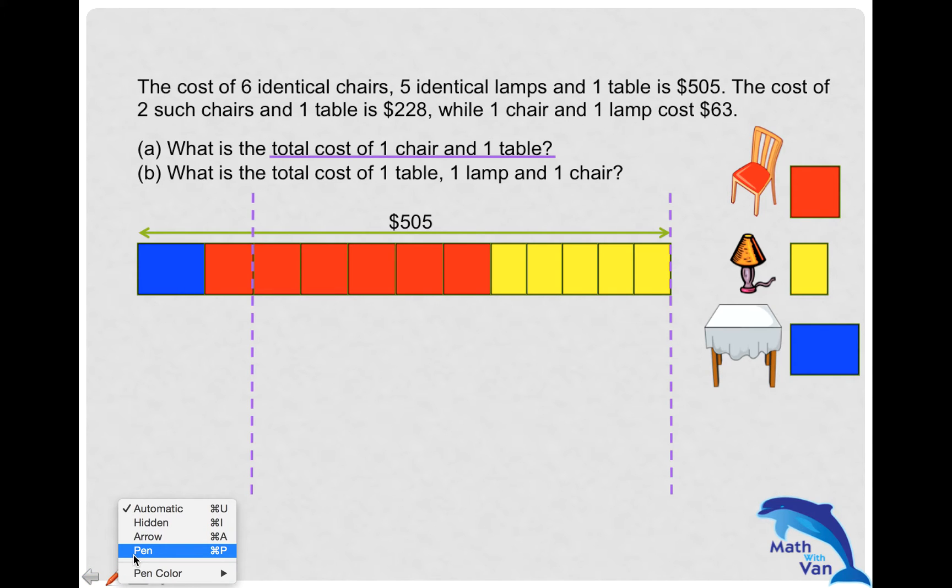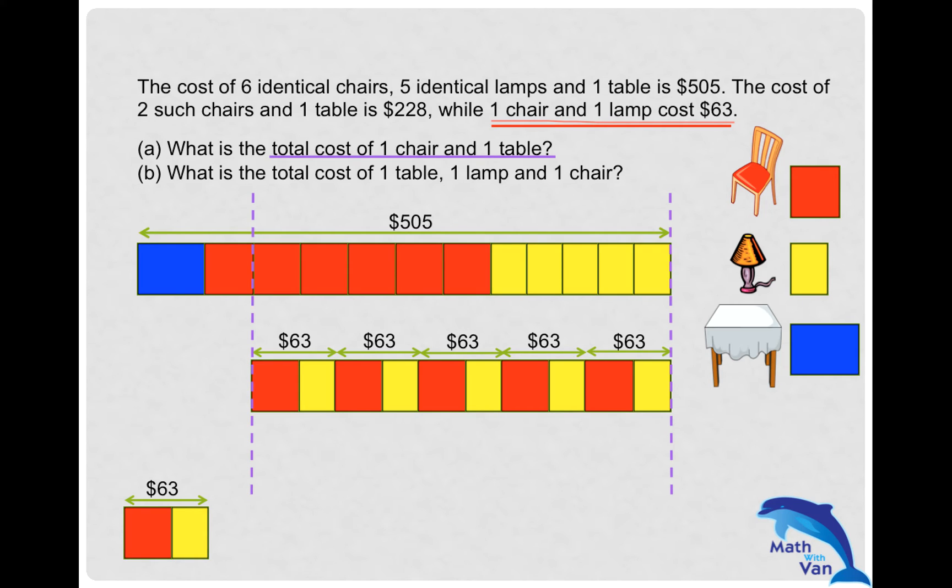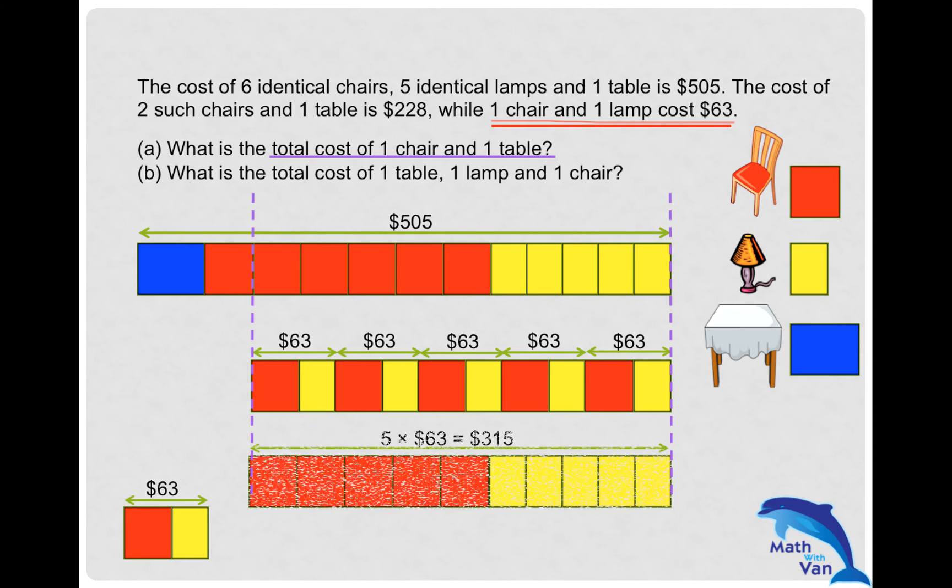Look at this—I just highlighted this particular statement: five groups of equal number of chairs and lamps. If I know one group is $63, I need five groups of it to have five chairs and five lamps. Rearranging them makes it clearer. This portion is actually $315, so I substitute this with the actual value: 5 × $63 = $315.